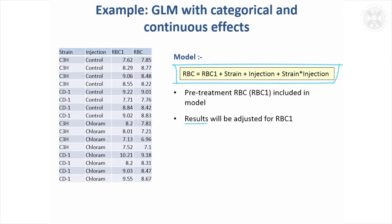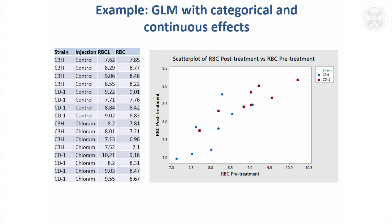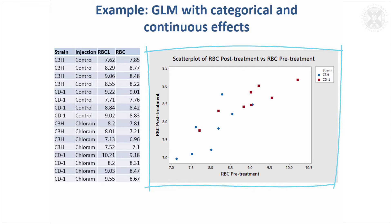The effect of including this is that it adjusts the results for red blood cell count. If there's any difference in red blood cell counts between groups before treatment, the model will adjust for that. Looking at the plot, you can see that the blue dots tend to be lower for both pretreatment and post-treatment red blood cell counts than the red squares on average, suggesting there is a difference in the groups already before treatment.